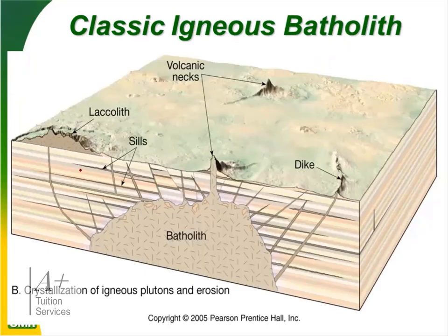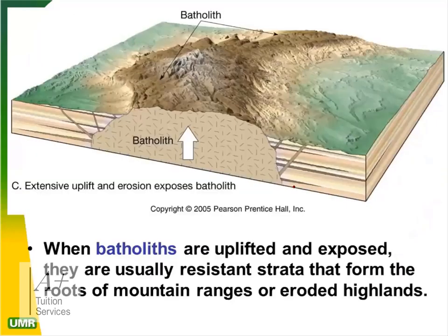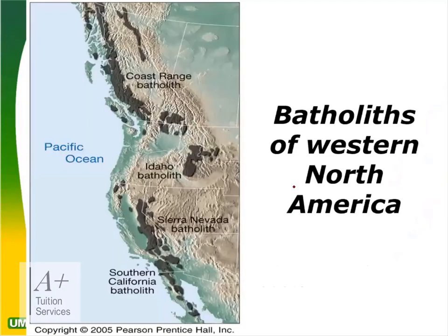In a classic igneous diagram the batholith is the large feature at the bottom, sills run horizontal, and dikes run vertical. When batholiths are uplifted and exposed they form resistant strata — the roots of mountain ranges or eroded highlands. Examples are the batholiths of western North America: the Coastal Range Batholith and the Southern California Batholith, which form the mountain ranges in California.